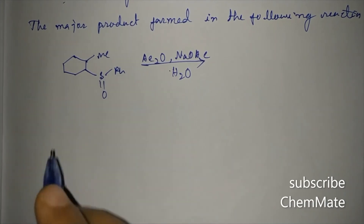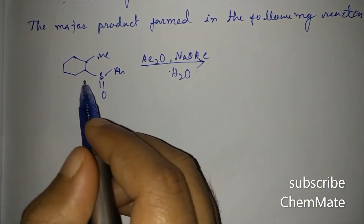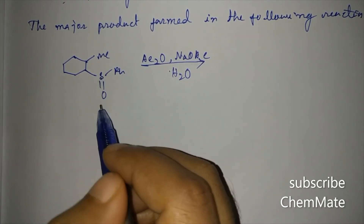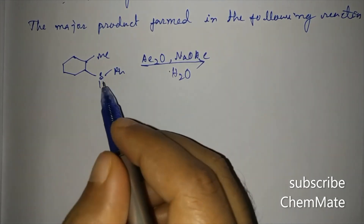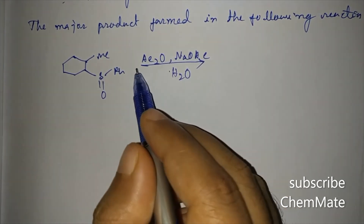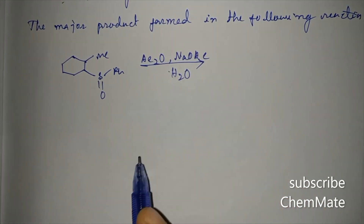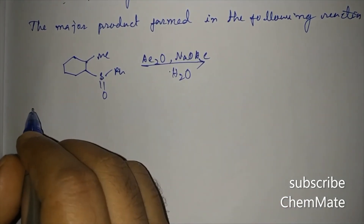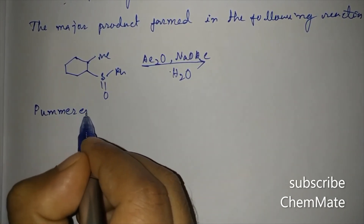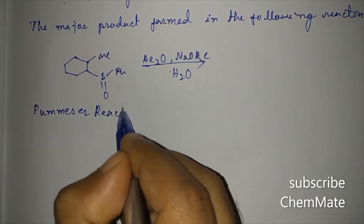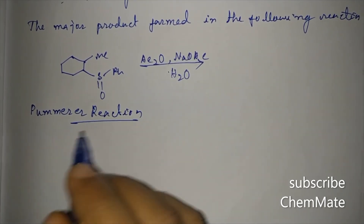The next question asks for the major product of a reaction involving cyclohexane with a methyl group and a sulfinyl (sulfoxide) group, treated with Ac2O and NaOAc. This is an important rearrangement reaction called the Pummerer rearrangement.